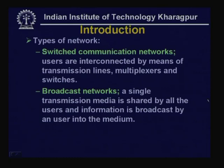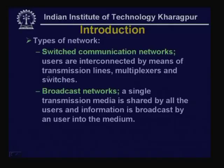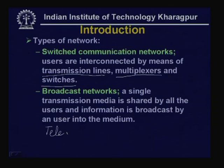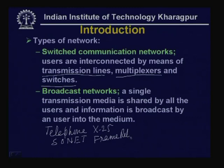Networks can be broadly divided into two types. One is switched communication network, where peer-to-peer communication is performed with the help of transmission lines, multiplexers, and switches. We have already discussed switched communication networks where multiplexing and switching techniques are used in networks such as telephone networks, SONET, where circuit switching is used, and packet switch networks such as X.25, frame relay, and ATM. These are essentially switched communication networks where either packet switching or circuit switching is used.